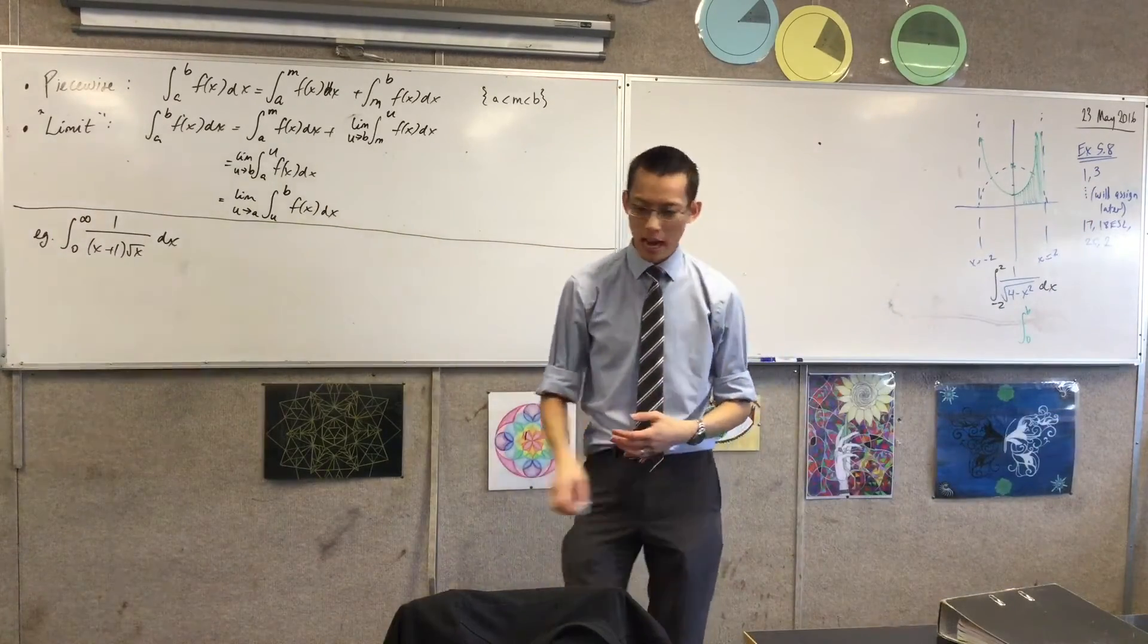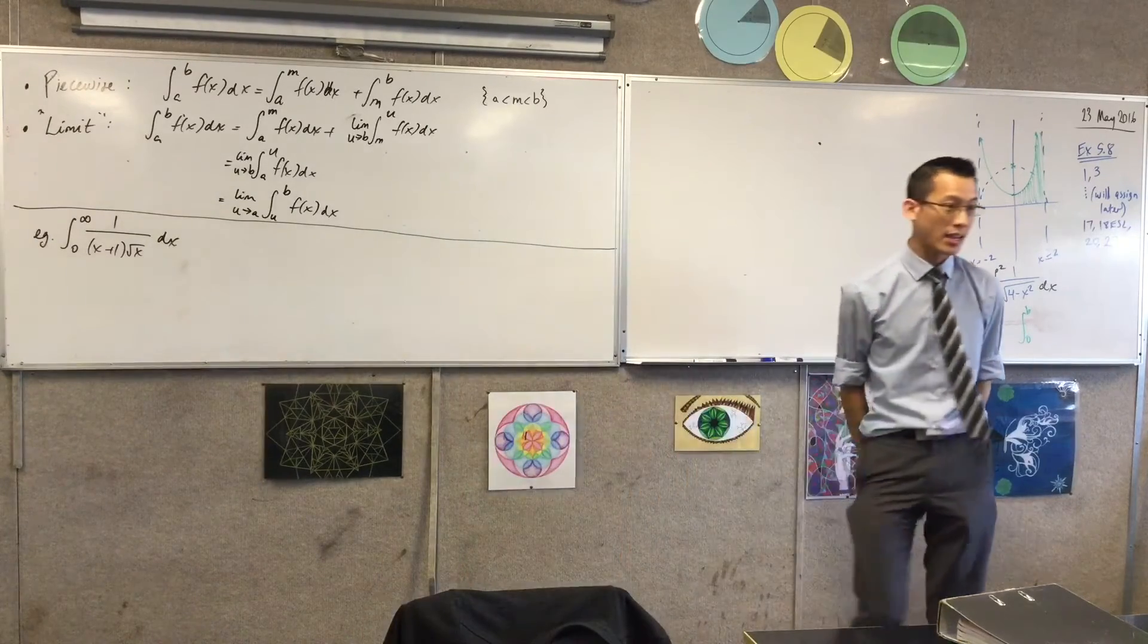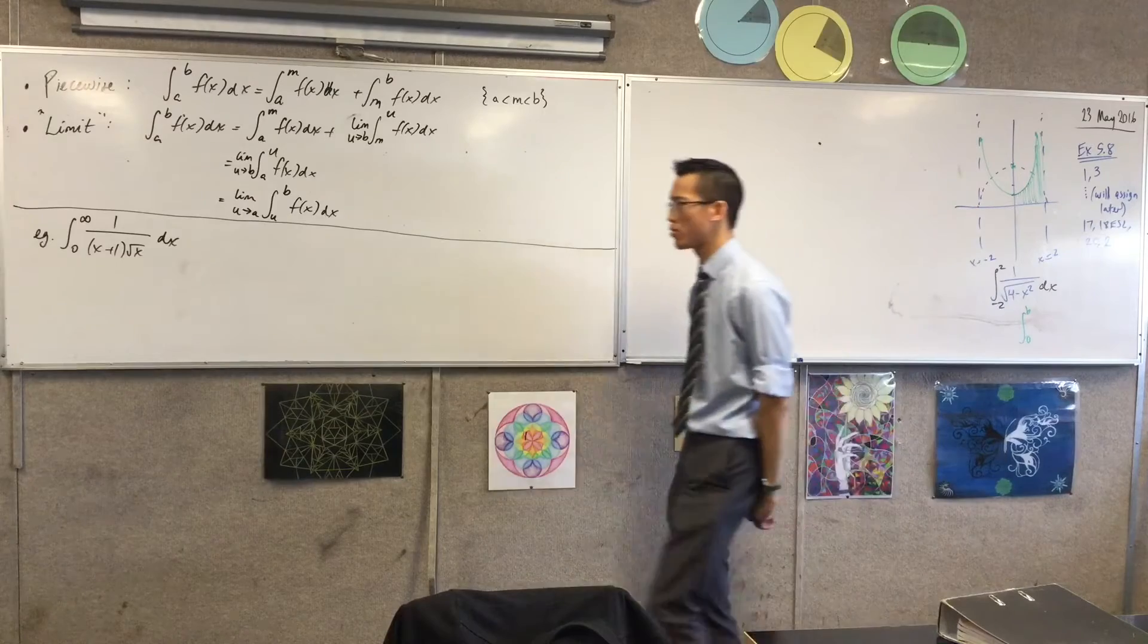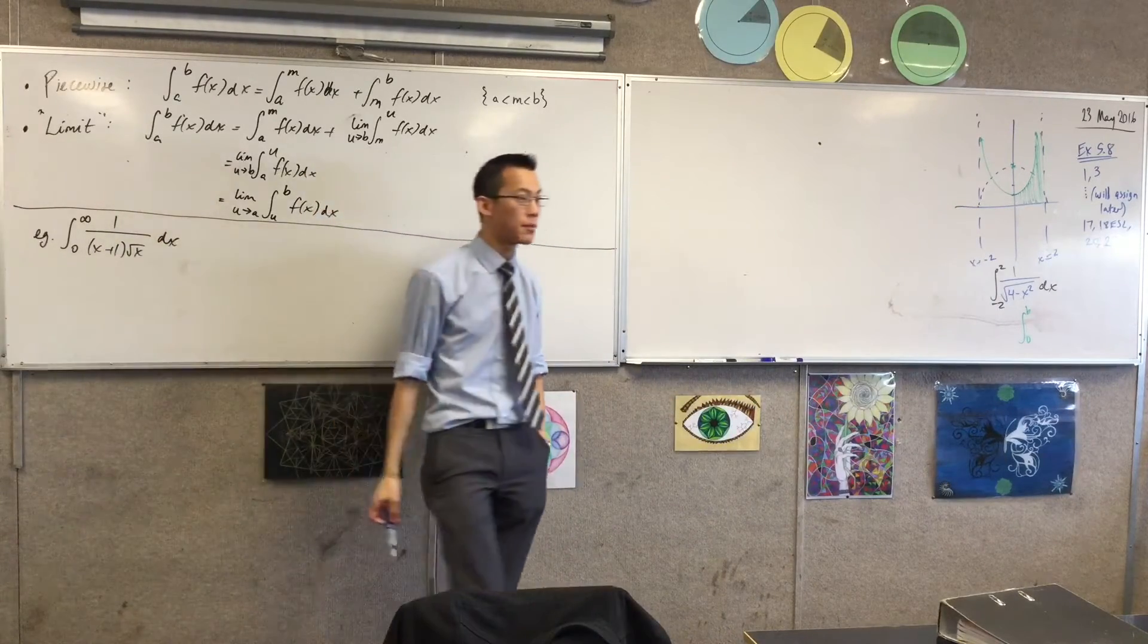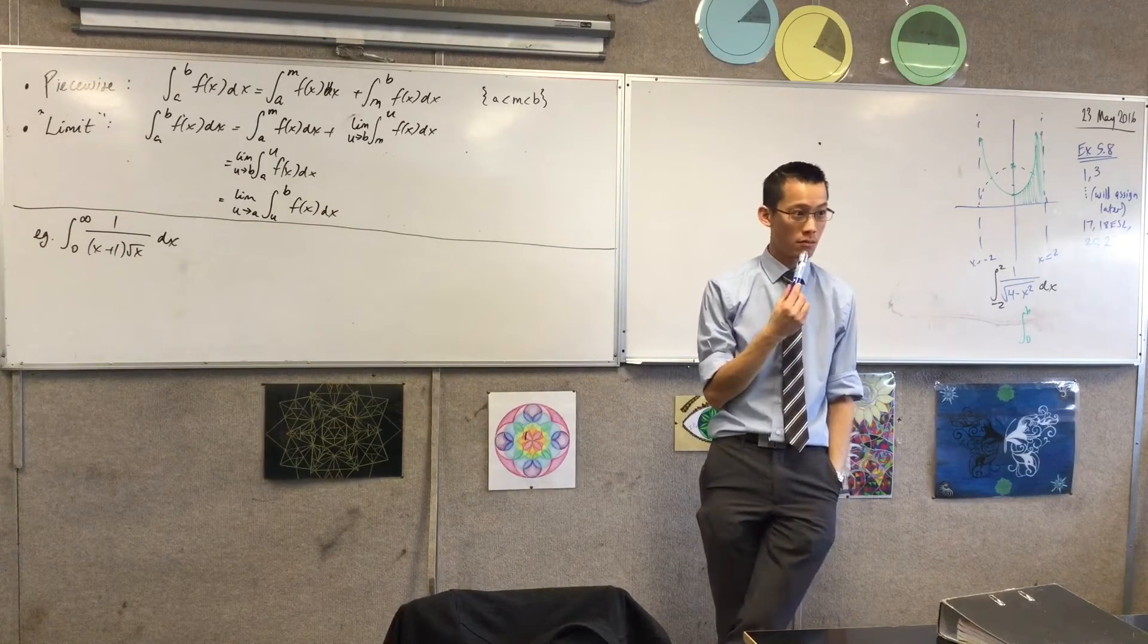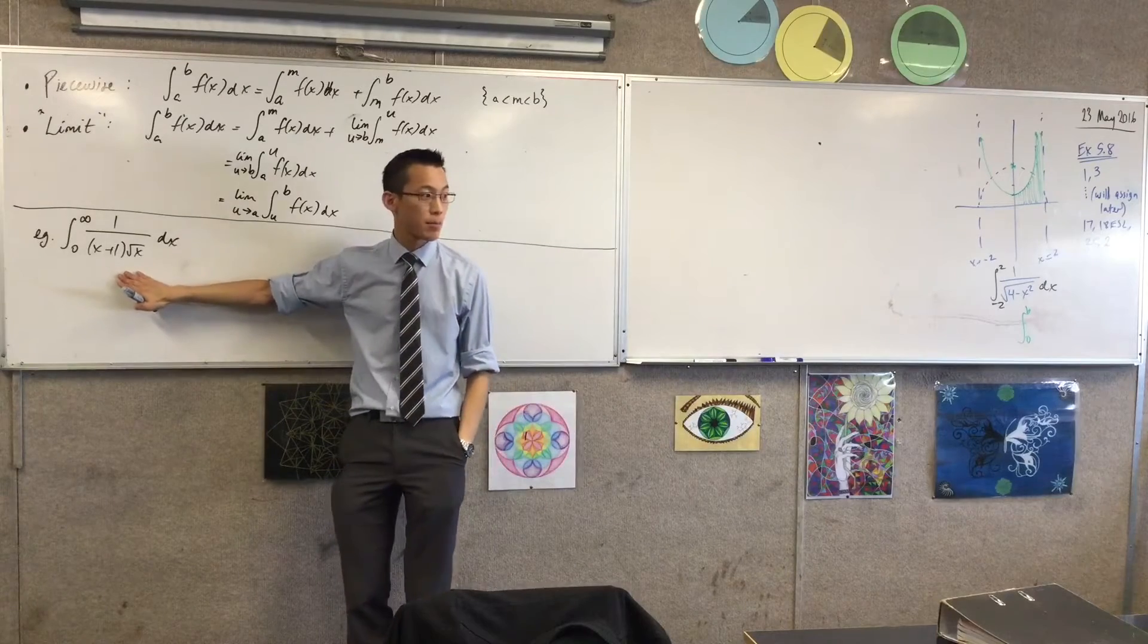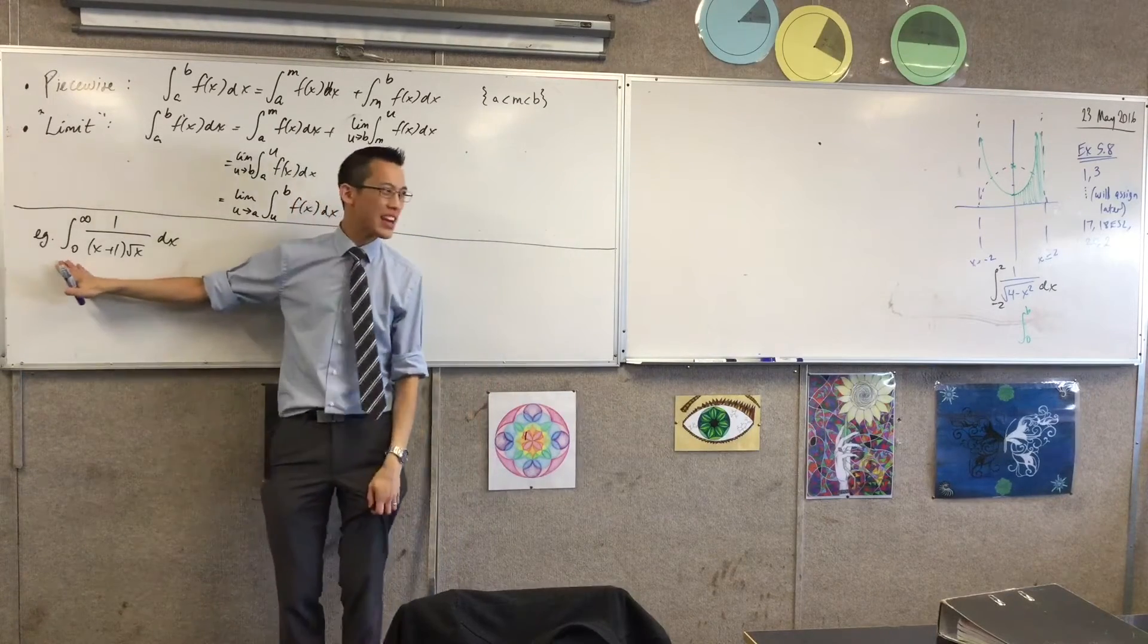Now, before we get started on this, I want to know what this thing is. What does it look like? Just think about the integrand for me. As x approaches 0, what is happening to the denominator? The denominator is also approaching 0. Yes. So therefore, as x approaches 0, this thing is approaching infinity. But of course, I have to say as it approaches, because you can't evaluate it at 0, can you?